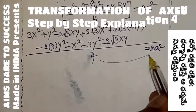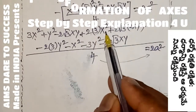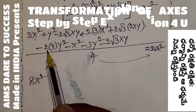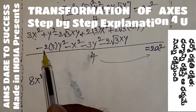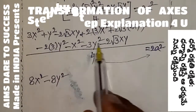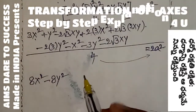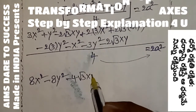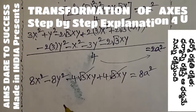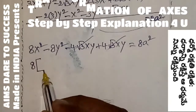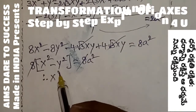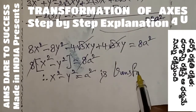Combining X² terms: 3 + 6 − 1 = 8X². Y² terms: 1 − 6 − 3 = −8Y². XY terms: −2√3XY + 4√3XY − 2√3XY = 0, they cancel. So we get (8X² − 8Y²)/4 = 2a². Moving 4 to the right: 8X² − 8Y² = 8a². Dividing by 8: X² − Y² = a². This is the transformed equation.